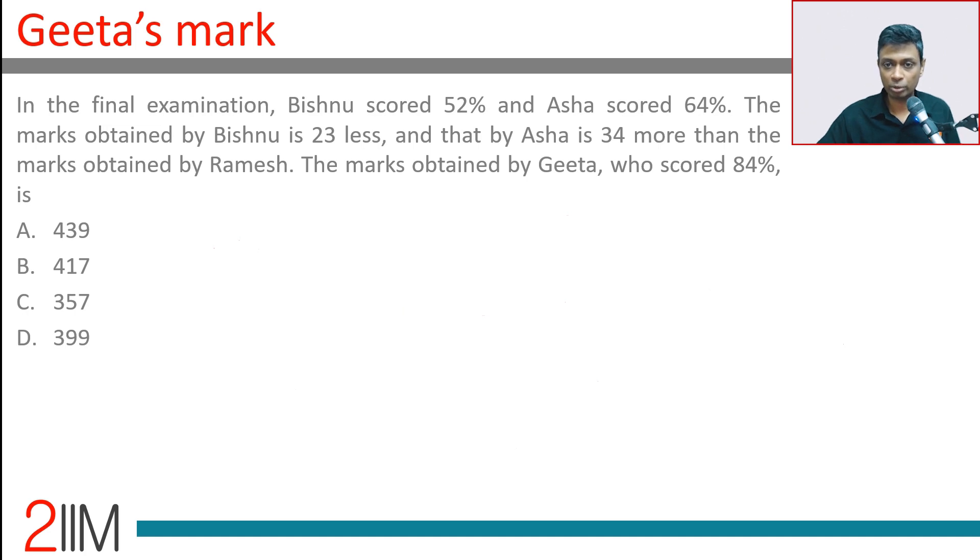In the final exam, Bishnu scored 52% and Asha scored 64%. So it's 12% more. The marks obtained by Bishnu is 23 less, and that by Asha is 34 more than the marks obtained by Ramesh.